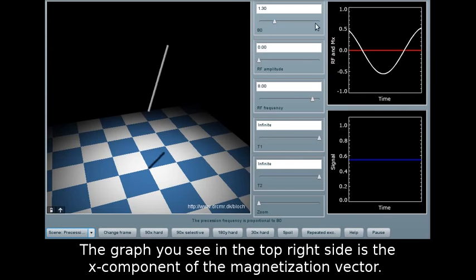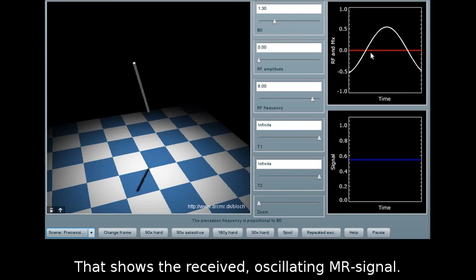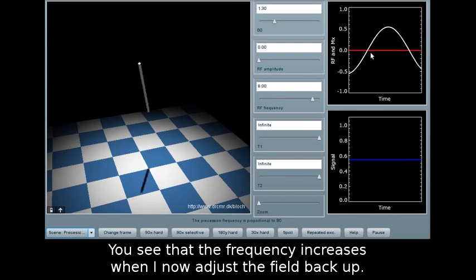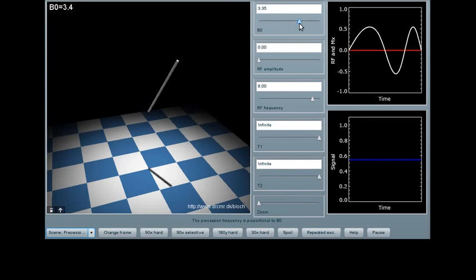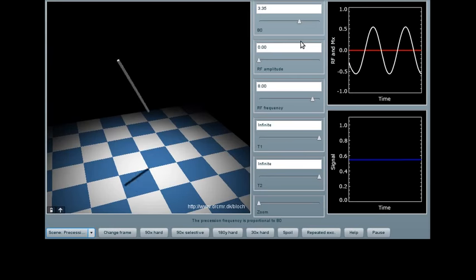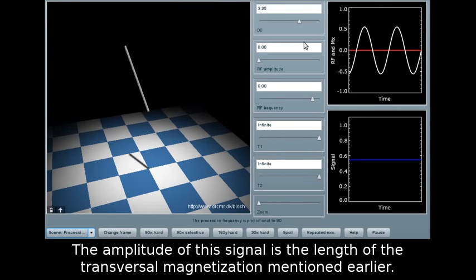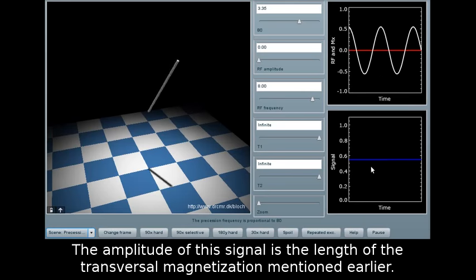The graph you see in the top right side is the X component of the magnetization vector. That shows the received oscillating MR signal. You see that the frequency increases when I now adjust the field back up. The amplitude of this signal is the length of the transversal magnetization mentioned earlier.